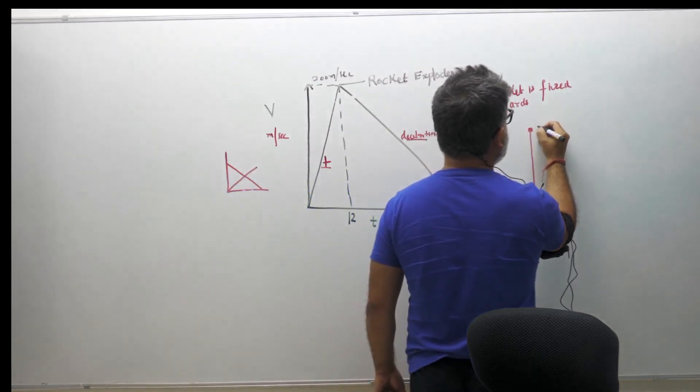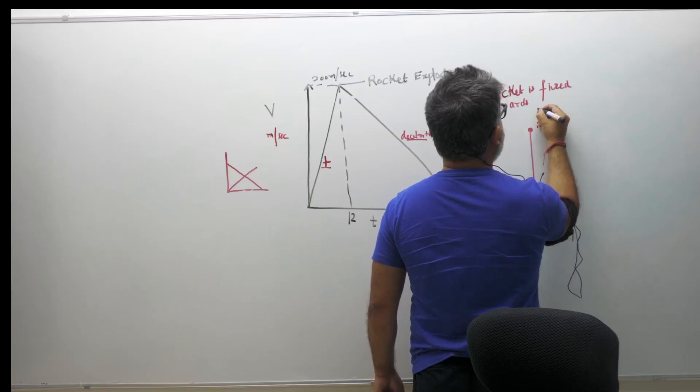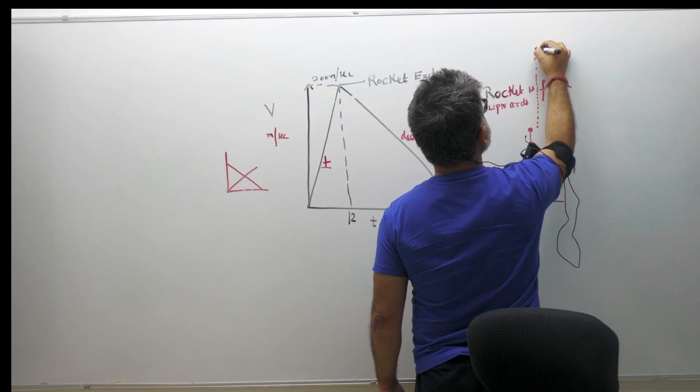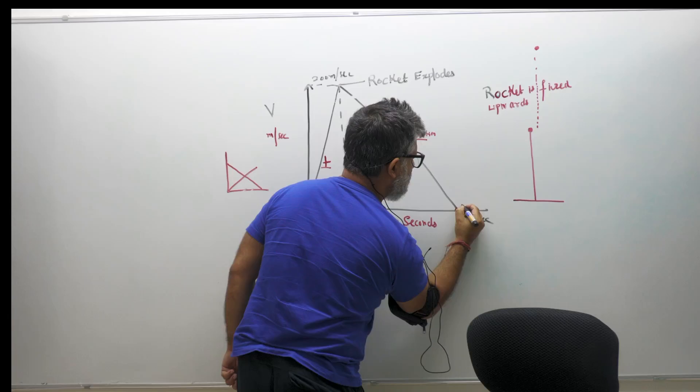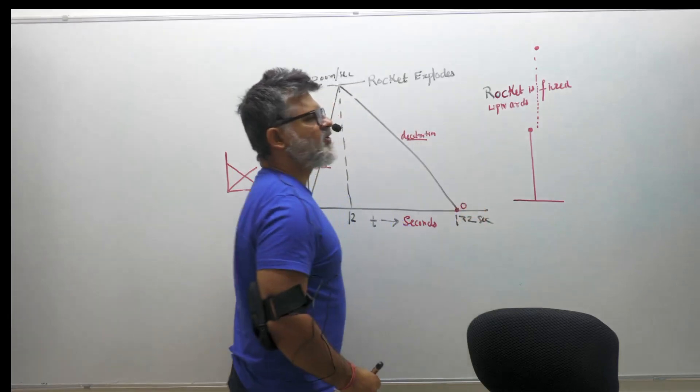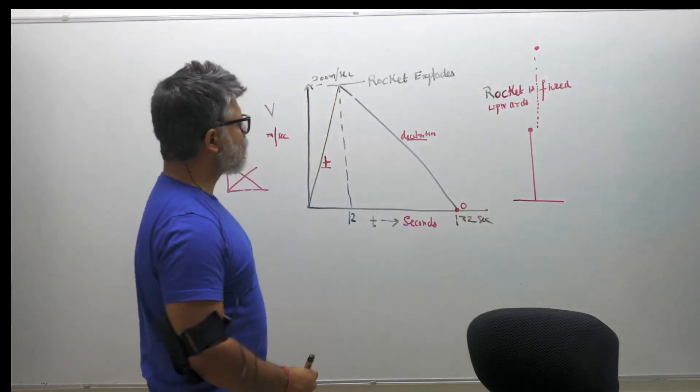So what will happen once the rocket explodes? It still has momentum and it will continue to go up, and then it reaches the highest point where the velocity becomes zero. You have to calculate the maximum height.